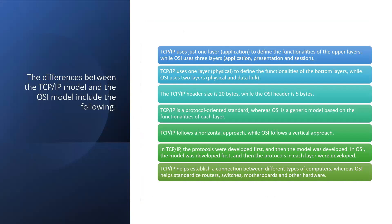The differences between the TCP/IP model and the OSI model include that TCP/IP uses just one layer — the physical layer — to define the functionalities of the bottom layers, whereas OSI separates these into distinct layers.